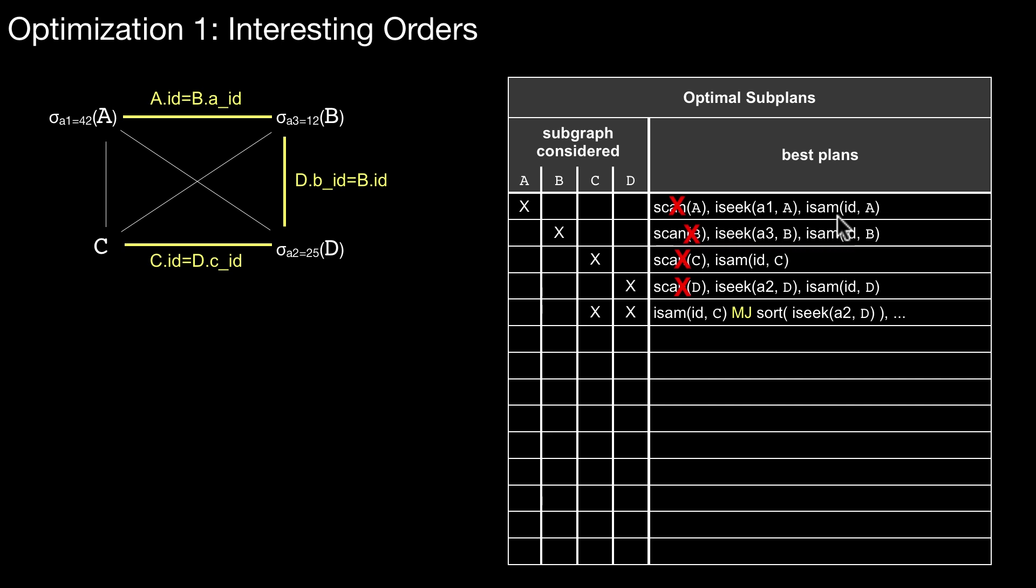So what is the rule here? The rule is that you differentiate among different subsets. You look at specific physical properties of those plans. This has different physical properties than this one. What do I mean by physical property? Well, physical property or interesting property is sort order.